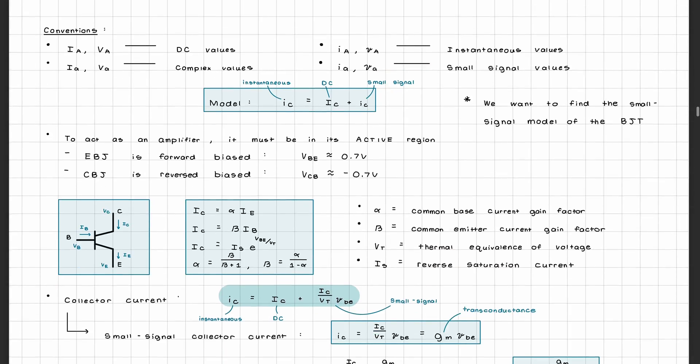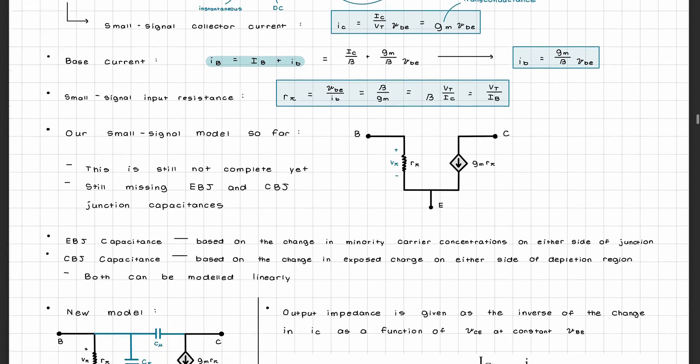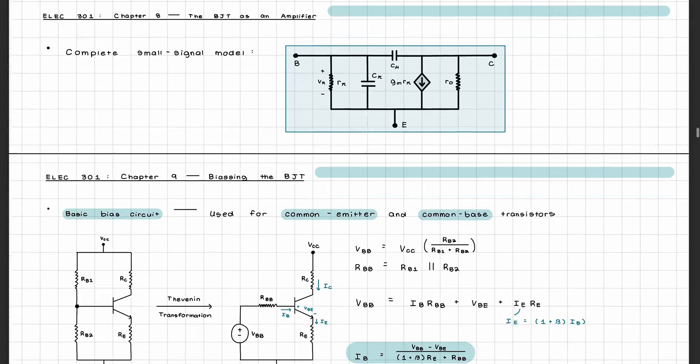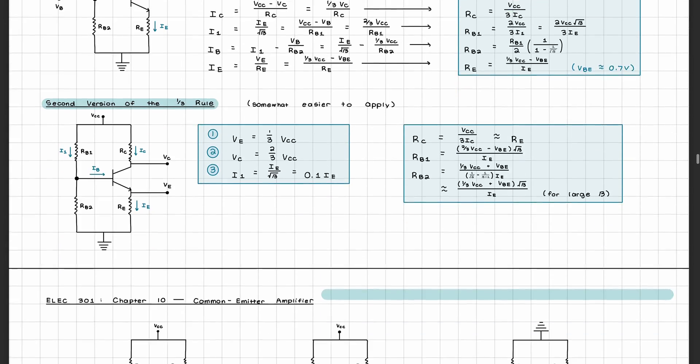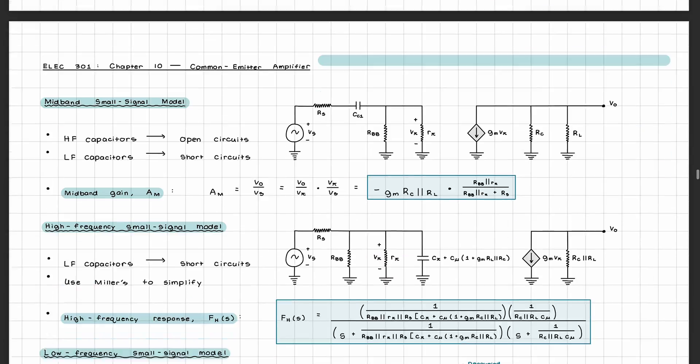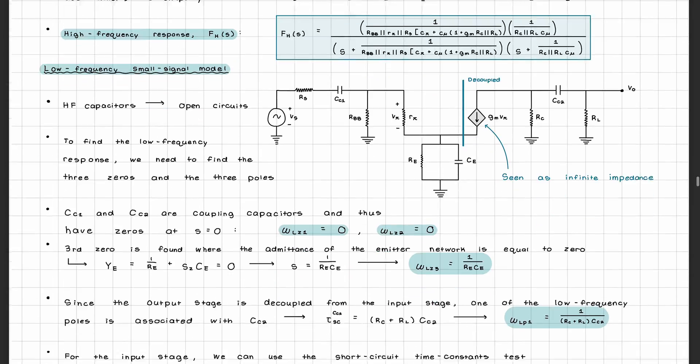In the second unit we learned about BJT transistors and their small signal model, how to bias a BJT using the one-third rule, and the frequency responses of different types of amplifiers such as the common bass and common emitter amplifiers.